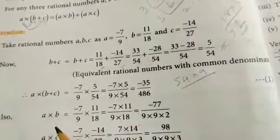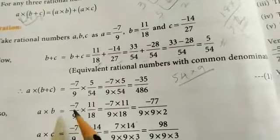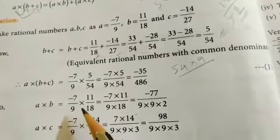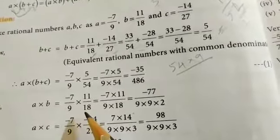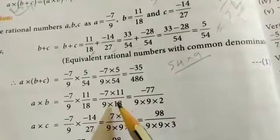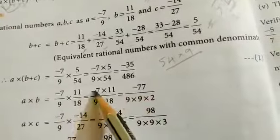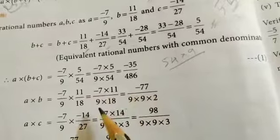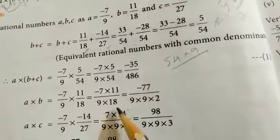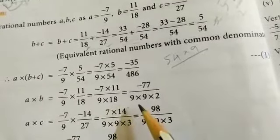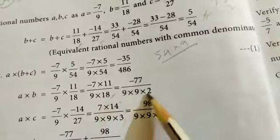Now we go to the RHS. First, simplify A into B. A value minus 7 by 9 into B value 11 by 18, equals minus 7 into 11 by 9 into 18. That gives minus 77 by 162.